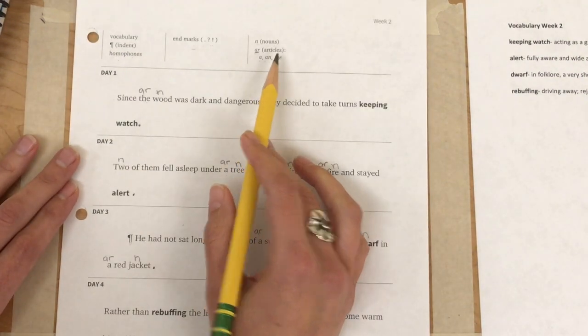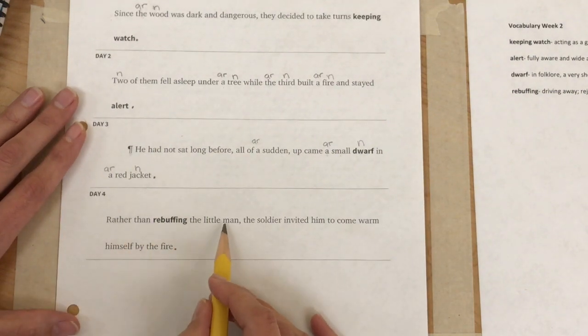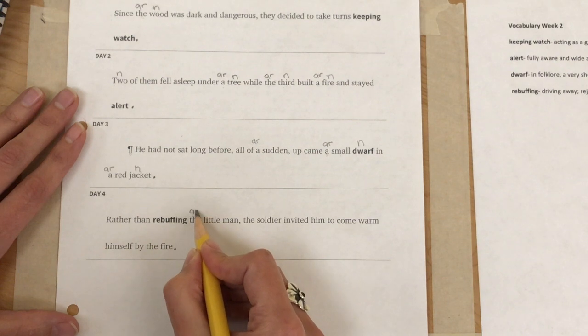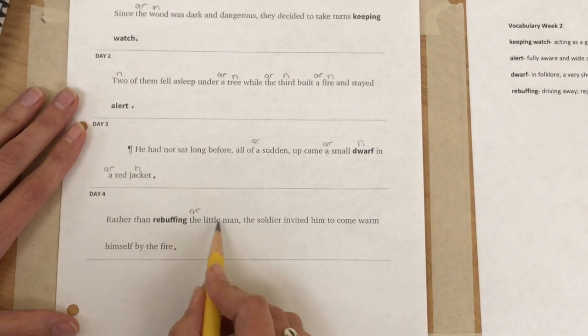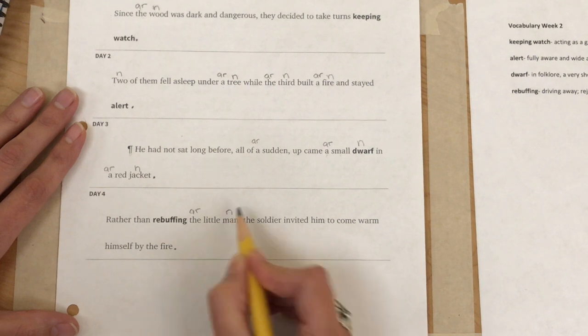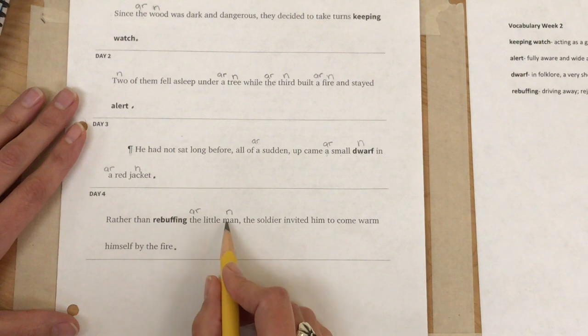All right, now we're going to look for our nouns and articles. Rather than rebuffing the little man. The is one of our articles, and it is talking about the man, right? So man is our noun. Little is not a noun. It's a word that describes the noun.